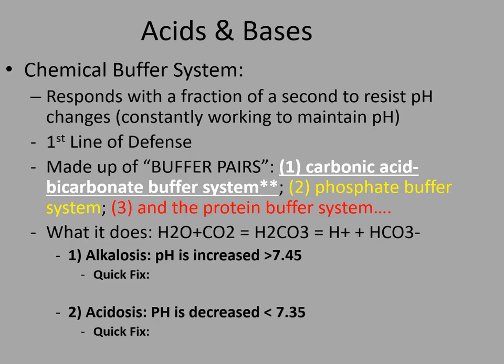The renal system is the most powerful of the three, but it can take a couple of days to kick in even if the kidneys are functioning normally. The first system — the most immediate, going on continuously — is the chemical buffer system, which has a lot of acid-base combinations floating in your plasma right now. The three subsystems are the carbonic acid-bicarb buffer system, the phosphate buffer system, and the protein buffer system.